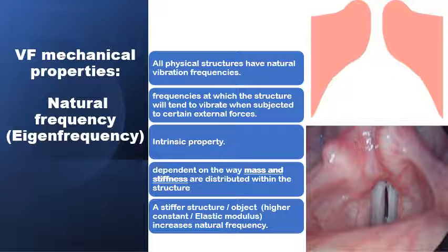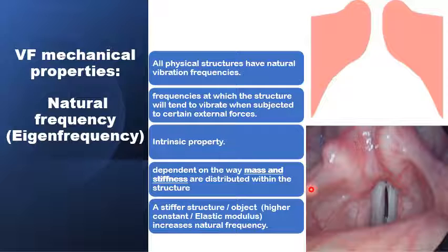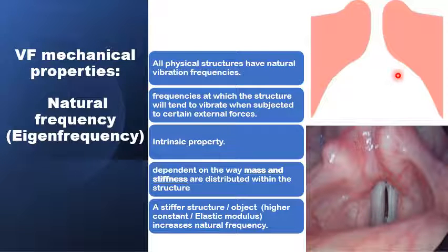Laryngeal muscles can modulate and fine-tune some of the mechanical properties of the vocal folds, including things like the natural vibrating frequency of the vocal folds, the eigenfrequency, and the vocal fold stiffness. The natural vibrating frequency of a structure would depend very much on the way the mass and the stiffness are distributed along the configuration of that structure along its length, breadth, and depth. All structures would have a natural vibrating frequency, and that would change according to the way the vibrating mass and the stiffness are distributed within that natural vibrating frequency.